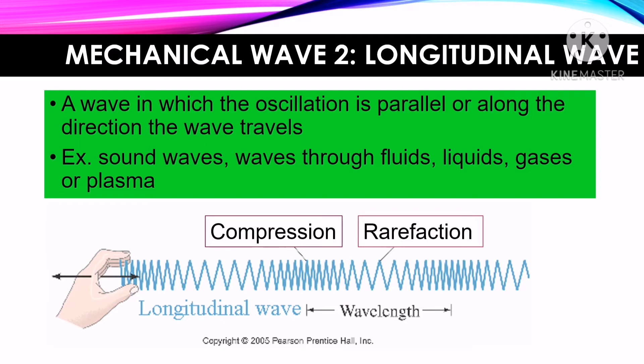A compression is a region in a longitudinal wave where the particles are closest together, while a rarefaction is a region in a longitudinal wave where the particles are farthest apart.